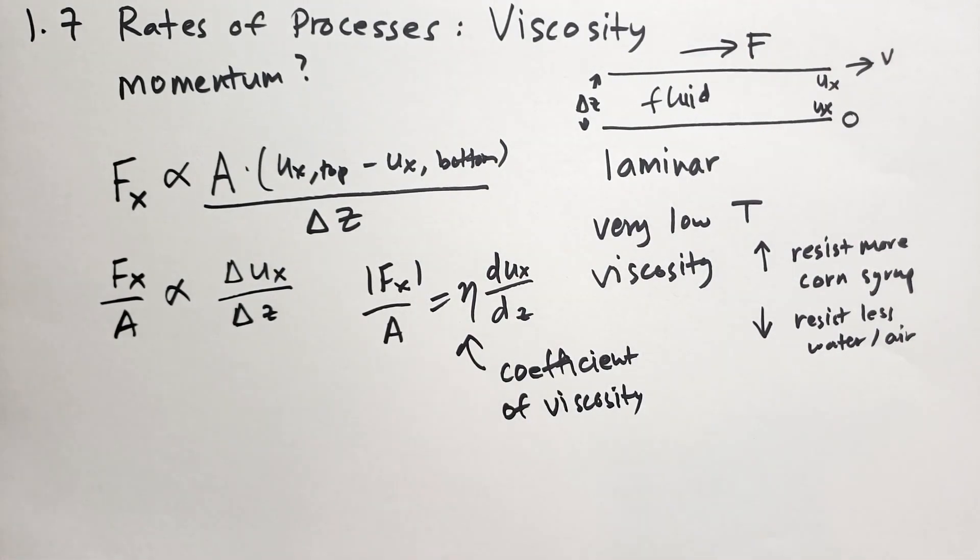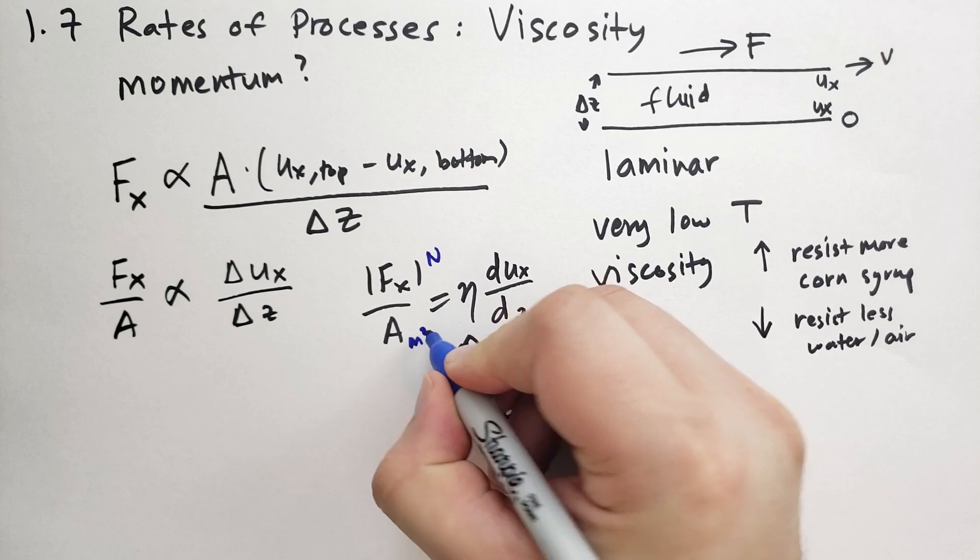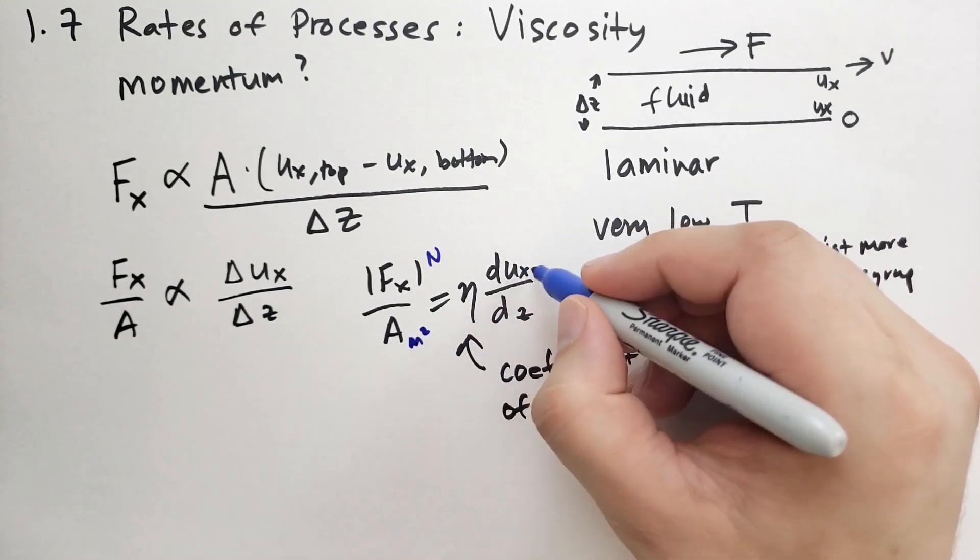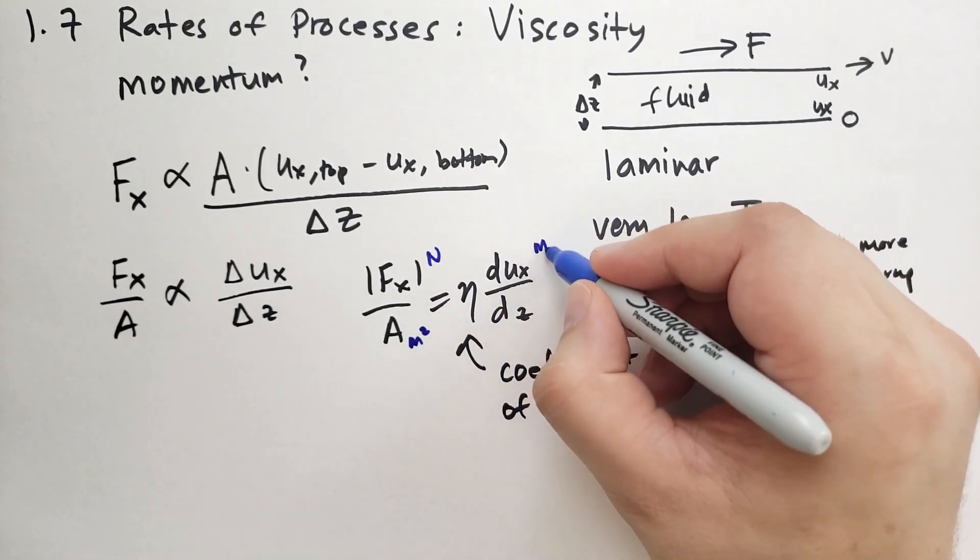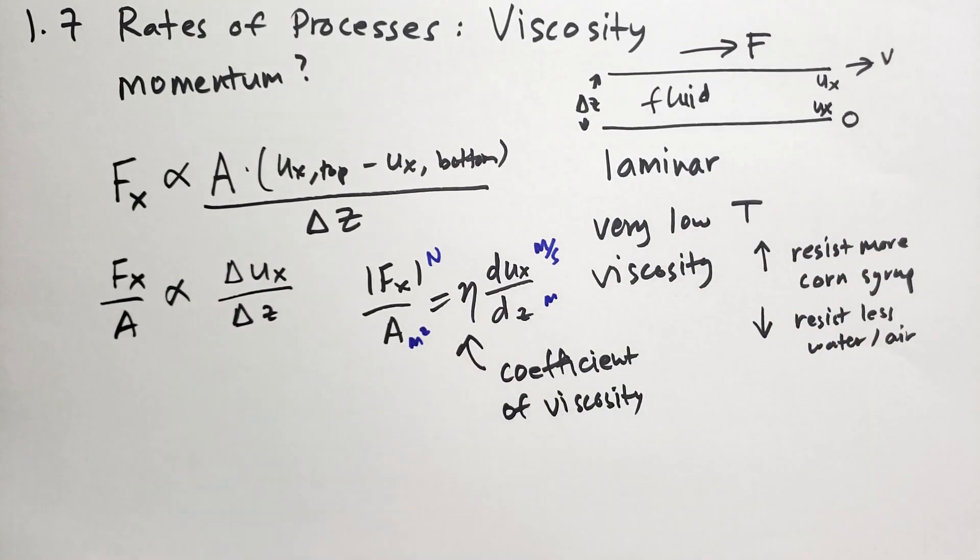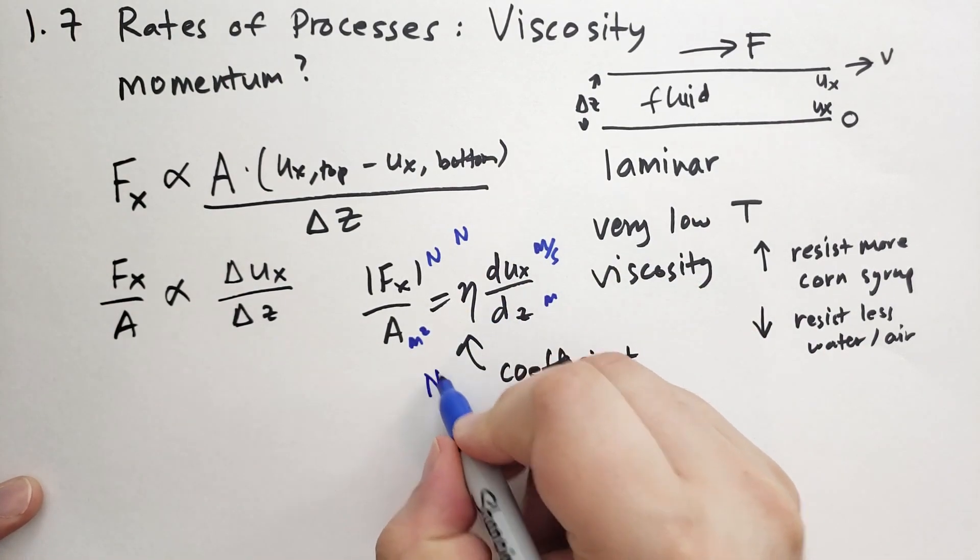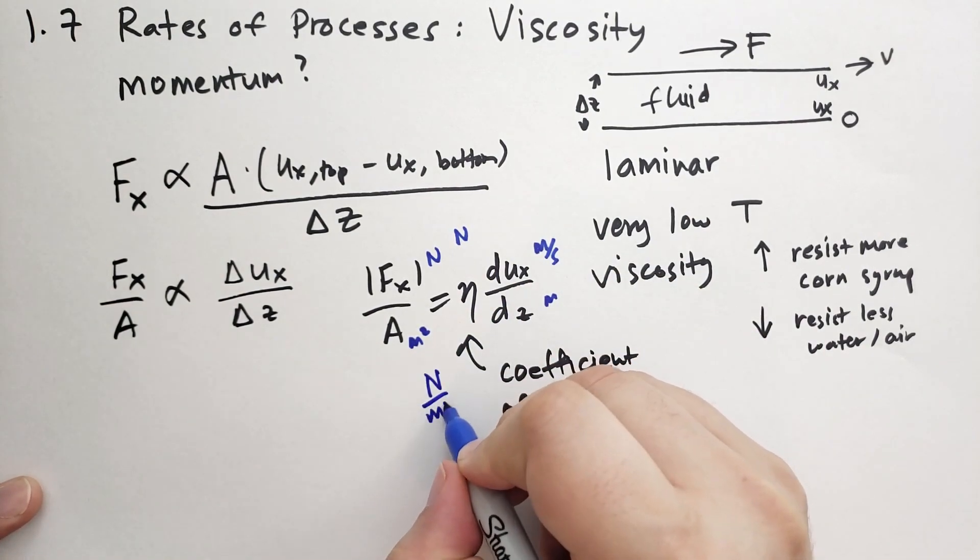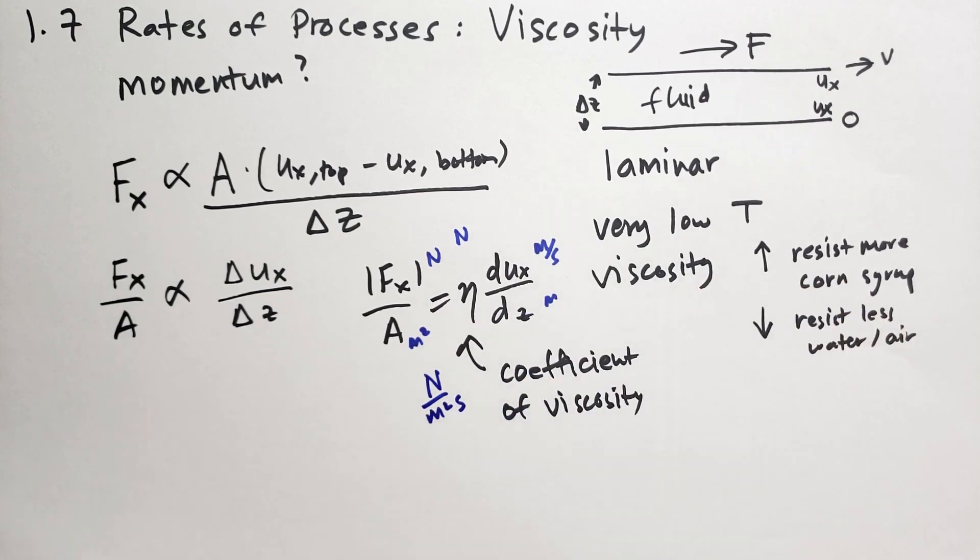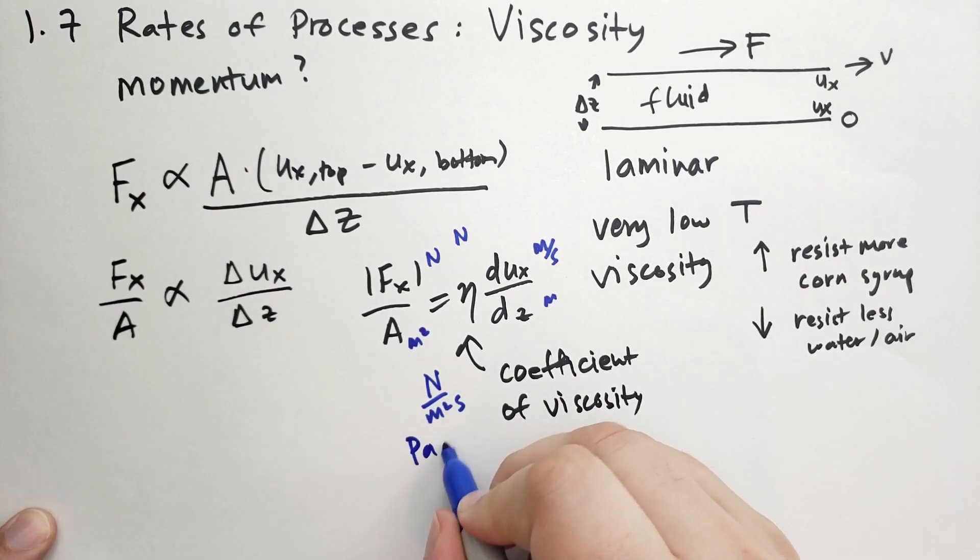If we do a little bit of dimension analysis, the force is in units of newtons, area is meters squared, velocity is meters per second, and this is units of meters. So eta will have units of newtons over meters squared per second.